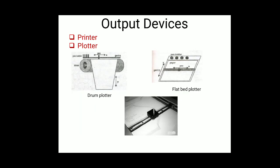Soft copy output devices include all types of display devices — visual output devices of the computer. The most common type is a monitor, which displays images or data for users to observe before producing a hard copy. Different types of displays include CRT, LCD, LED, and projectors.